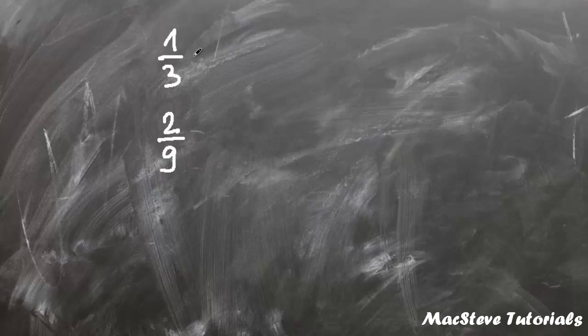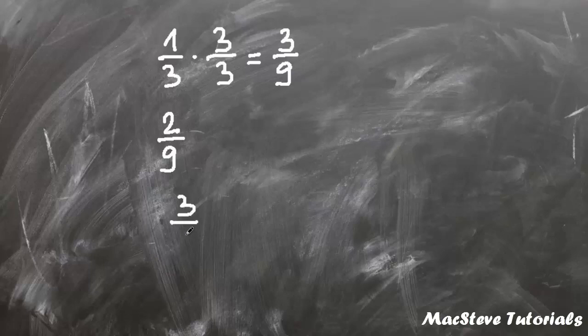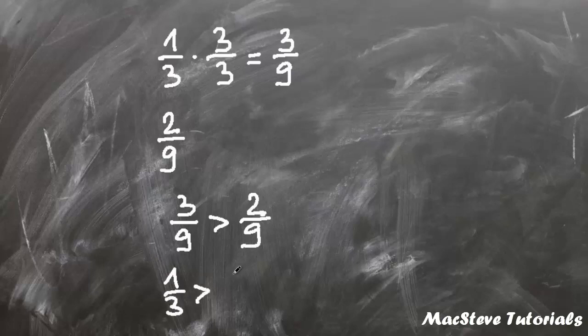For 3 and 9, the least common multiple is 9. So 1 third must be multiplied by 3, and by doing so you will get 3 ninths. Now when the fractions have the same denominator, to compare them you look at which fraction has the greater numerator. As you can see, 3 ninths is greater than 2 ninths, so 1 third is greater than 2 ninths.